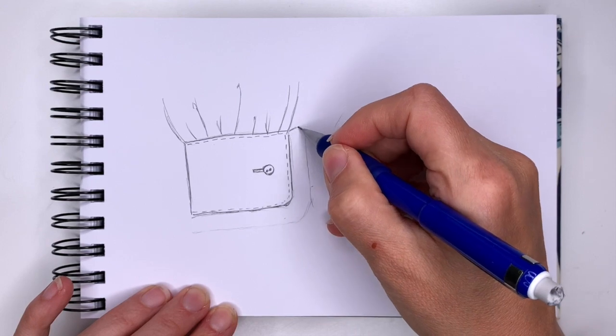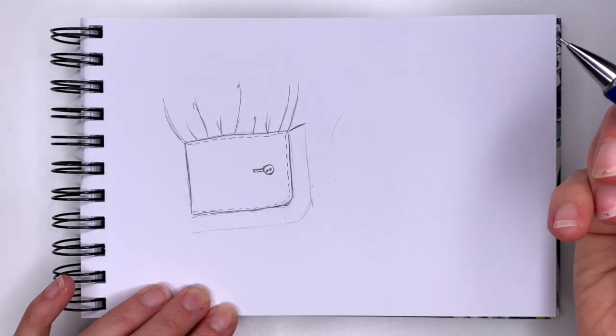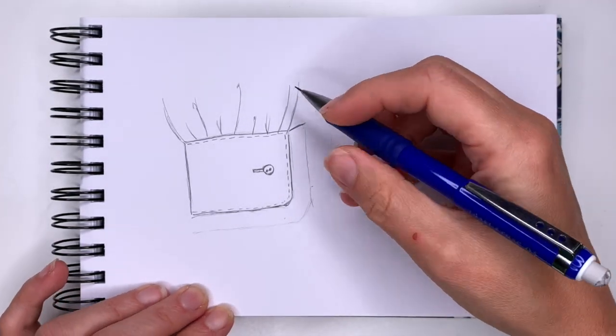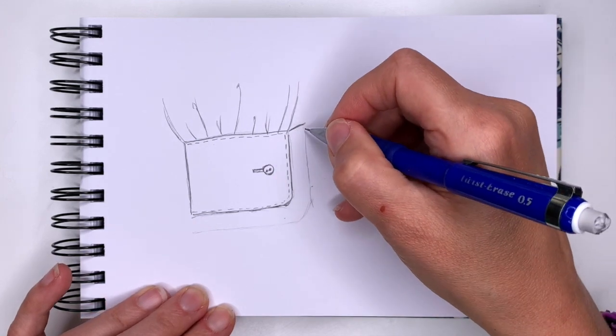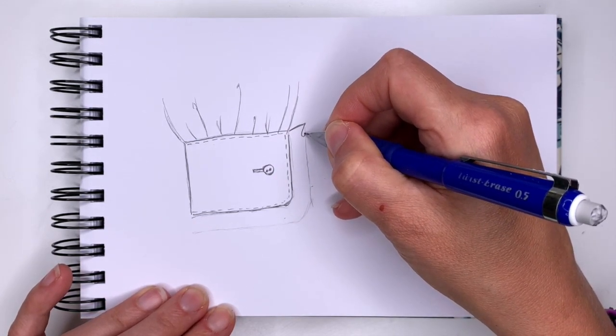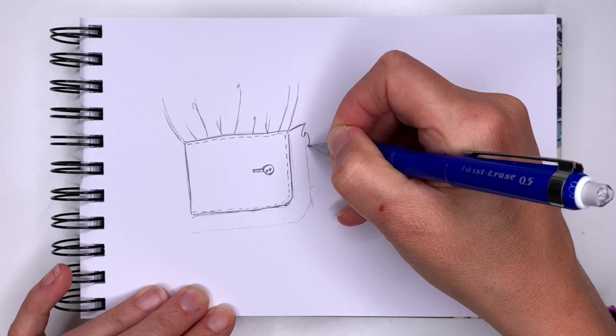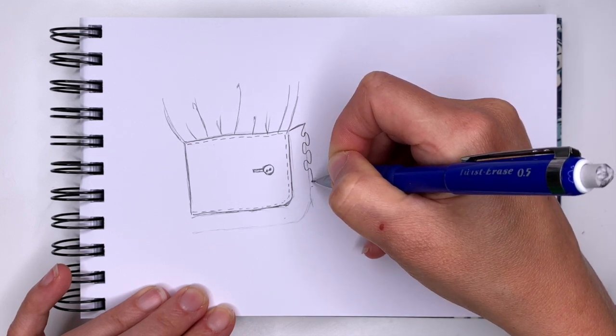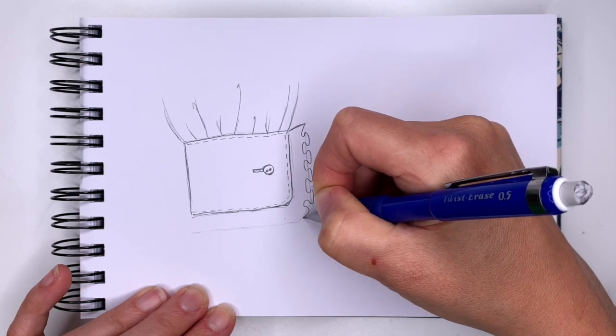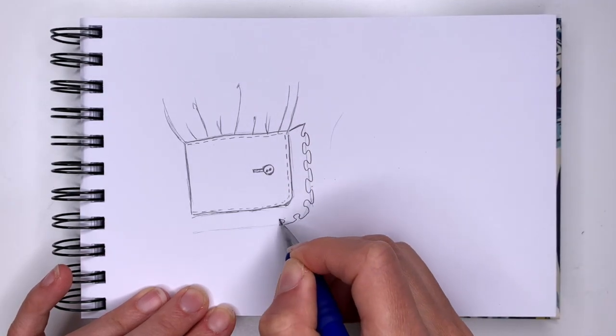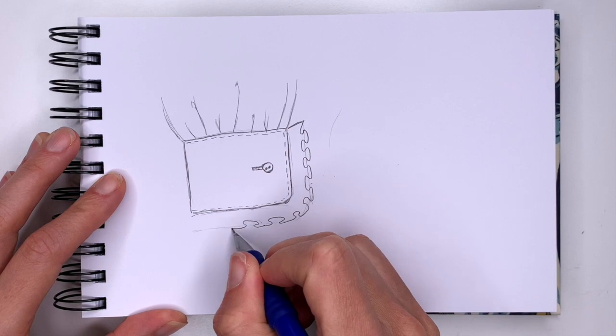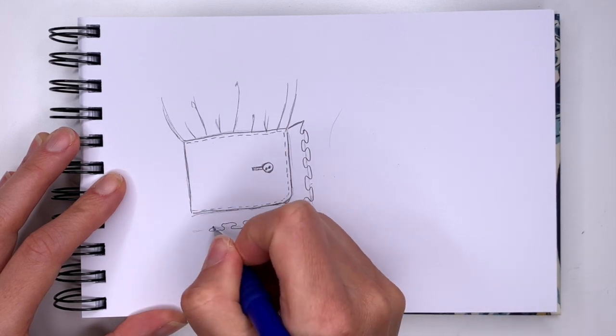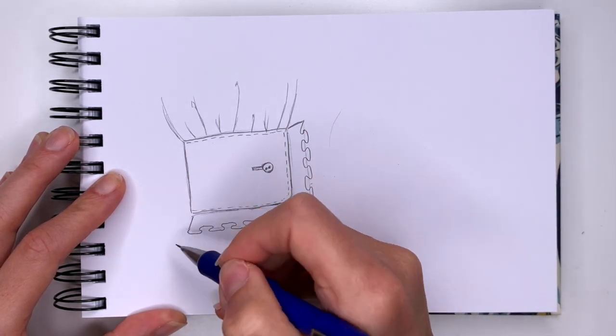And my first ruffle will be here. And then I'm going to draw my squiggly line. Just like I did on the regular ruffles. So in and out, it kind of looks like puzzle pieces.